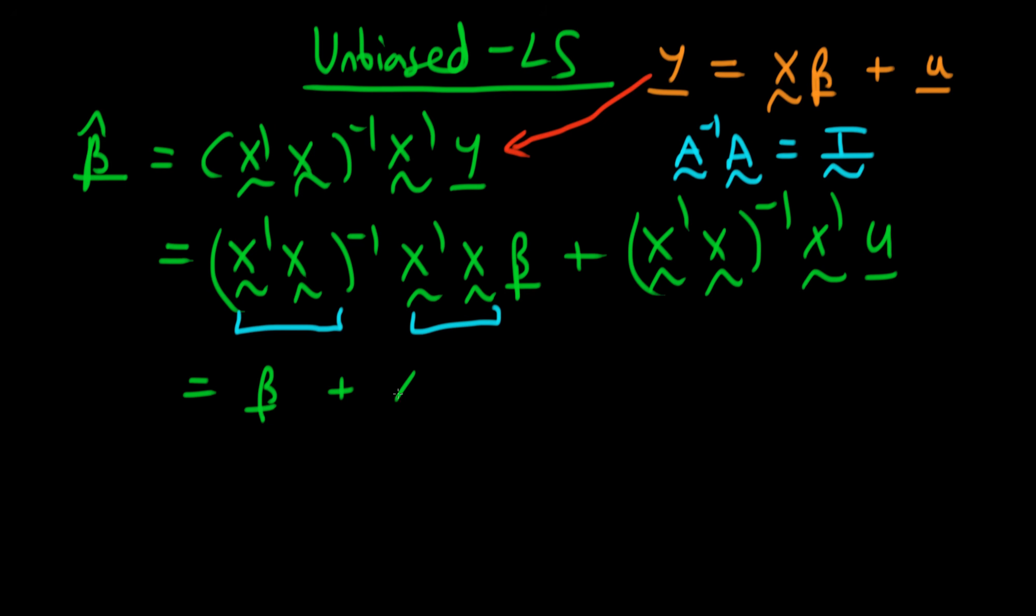So this first term simplifies greatly, I'm just left with beta. And then the second term here is just x primed x to the power minus one times x primed u. Okay so that's the general form of our least squared estimator. I haven't made any assumptions yet.